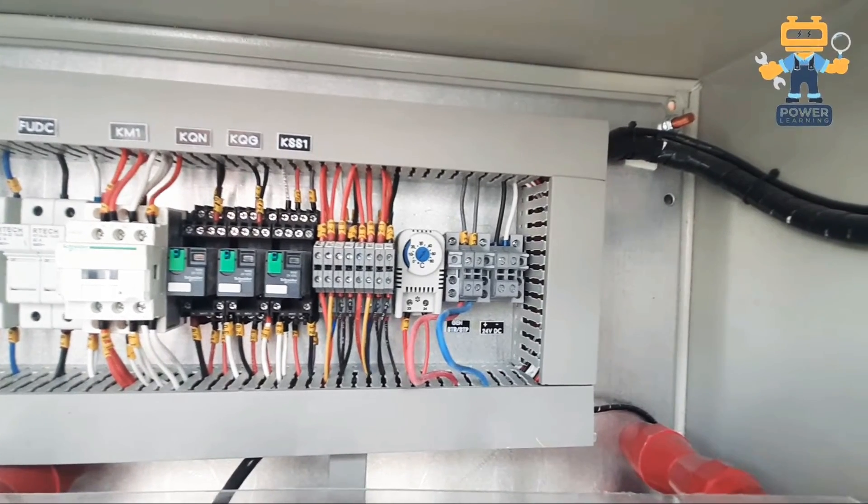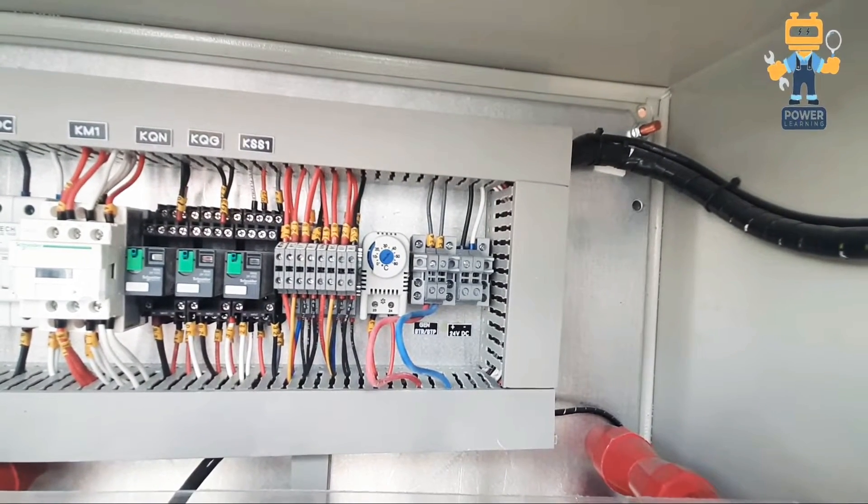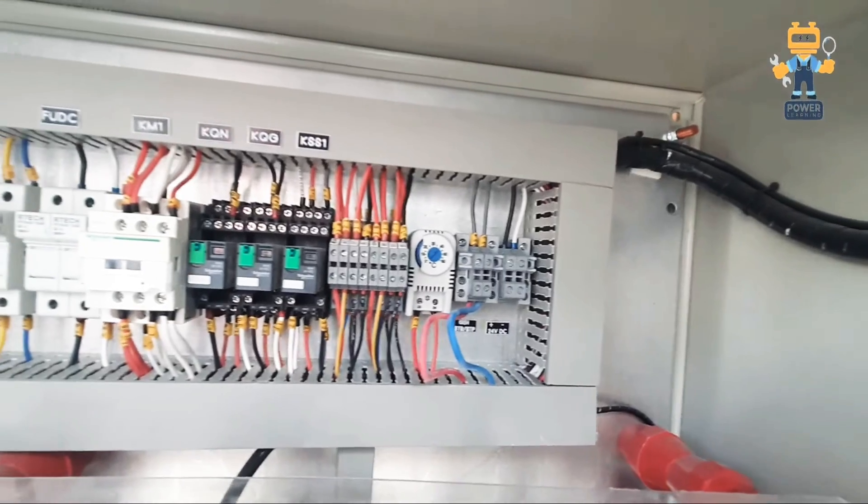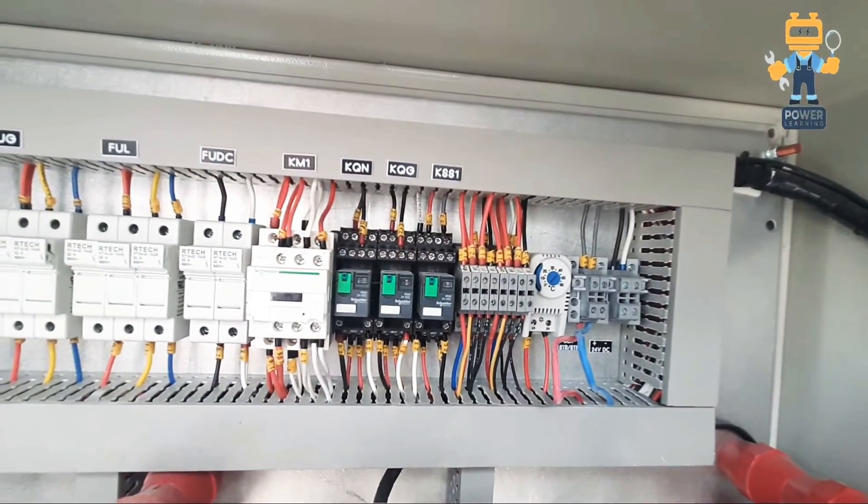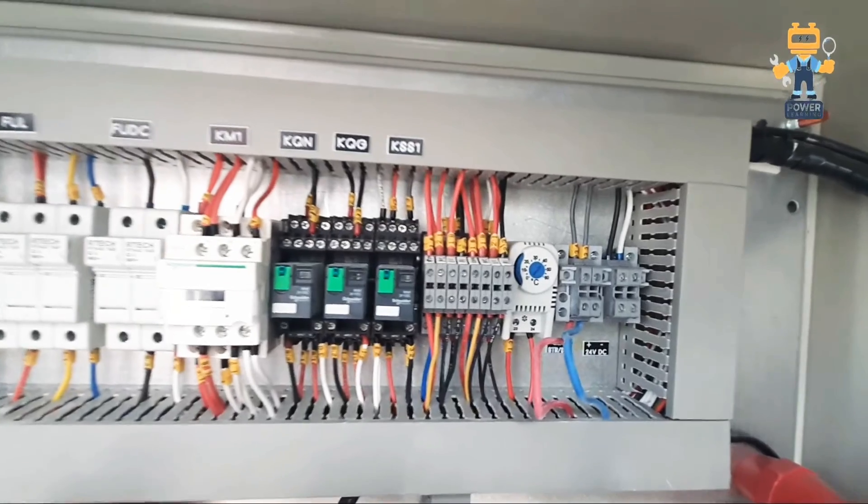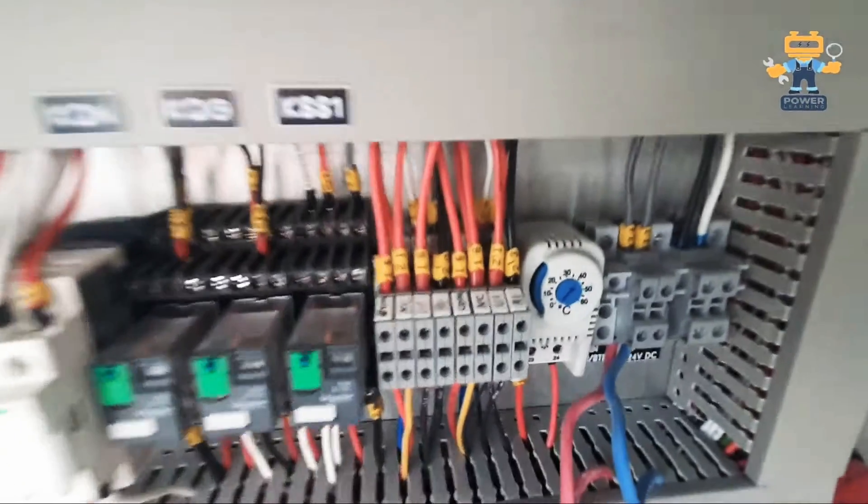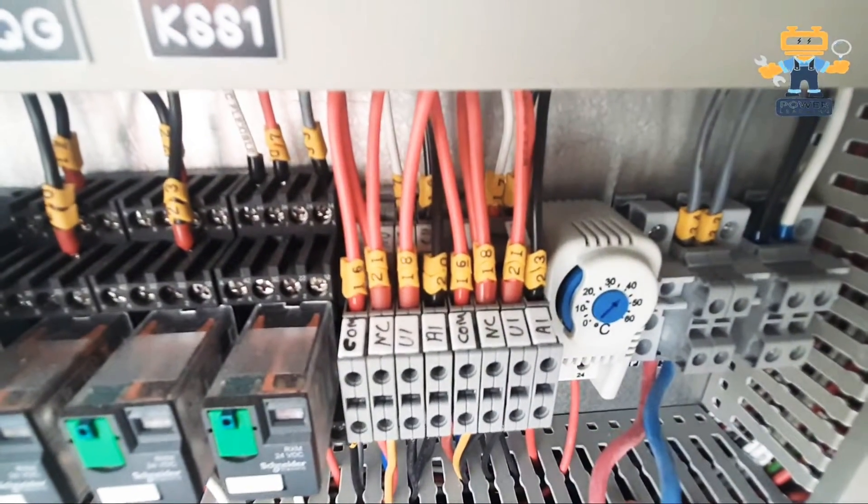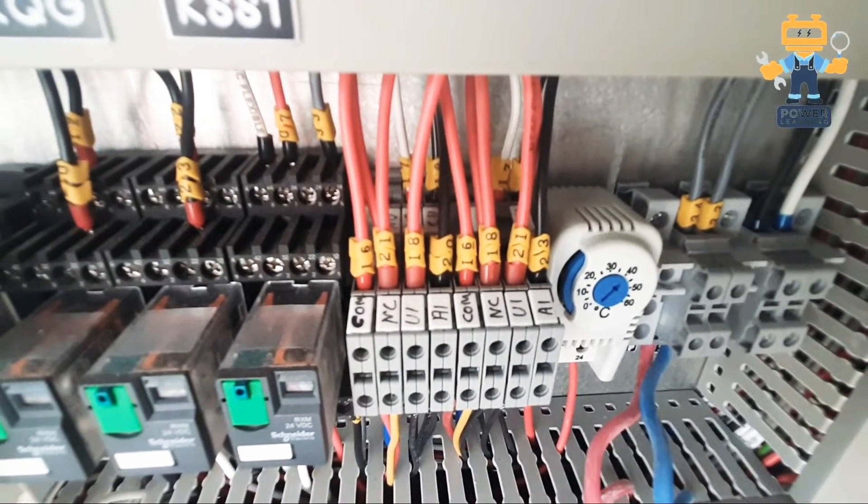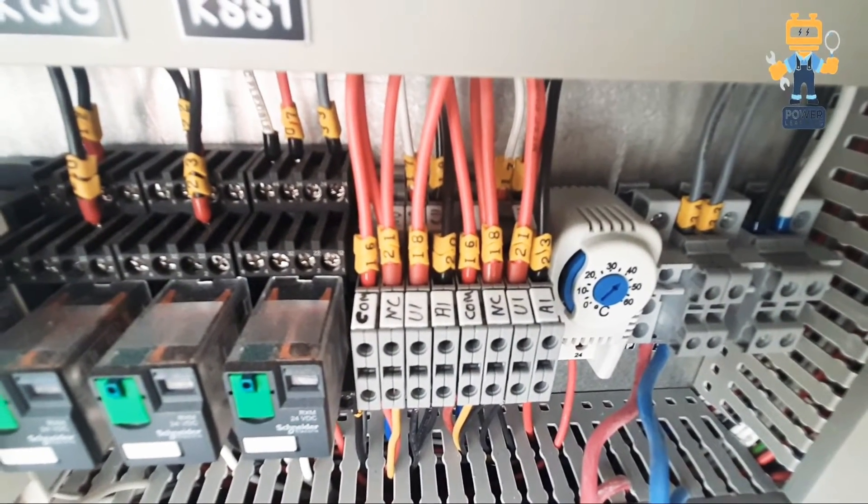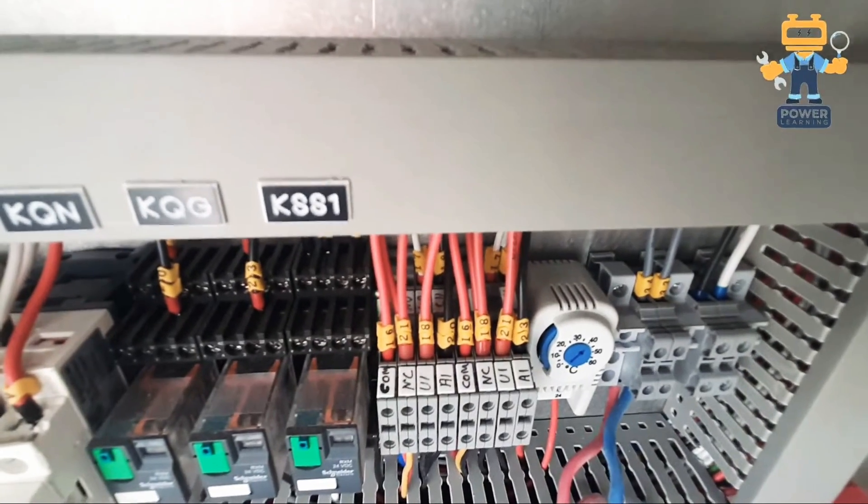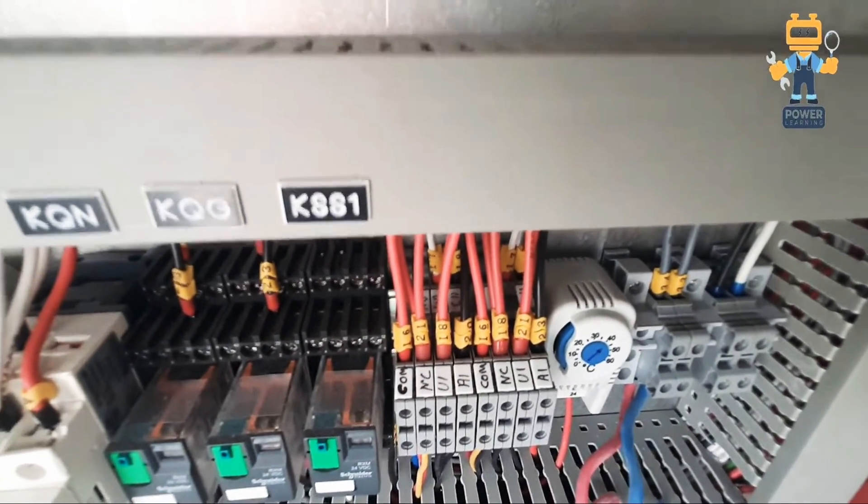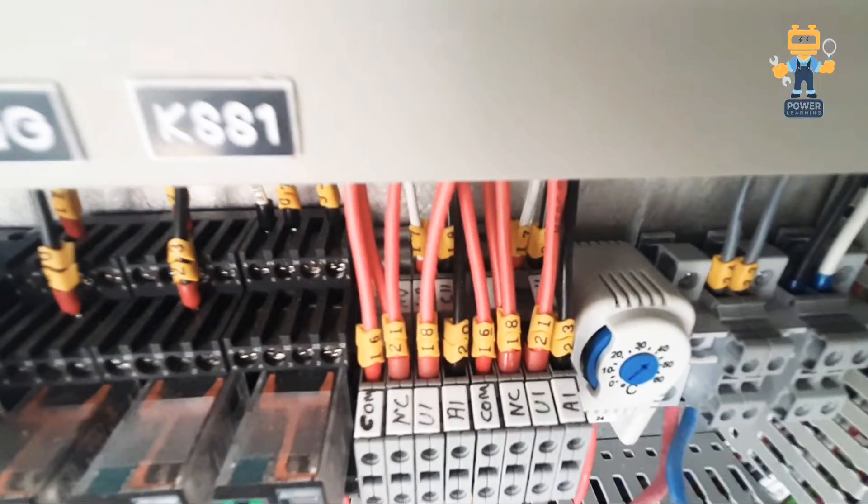These terminal connections are for our motor mechanism. We take out all the motor connections here on the terminal point and we terminated all the control cables and connected with the motor mechanism. As you see these are the numberings of the motor connection, so easily we can replace this motor and remove the cables from here.